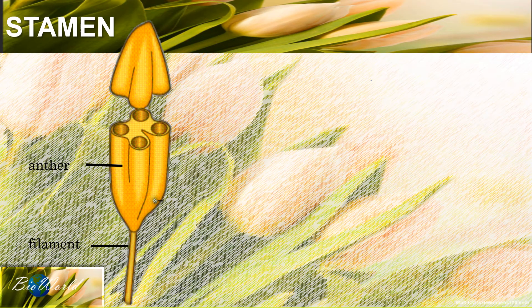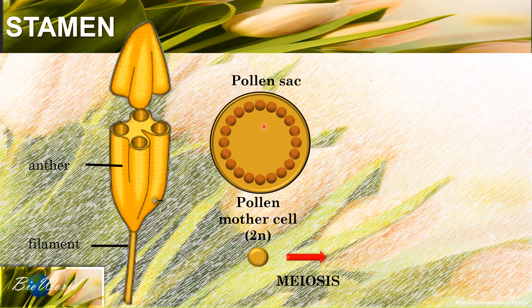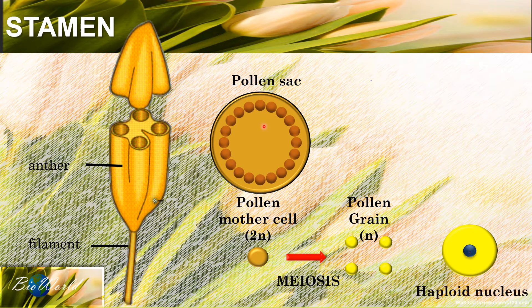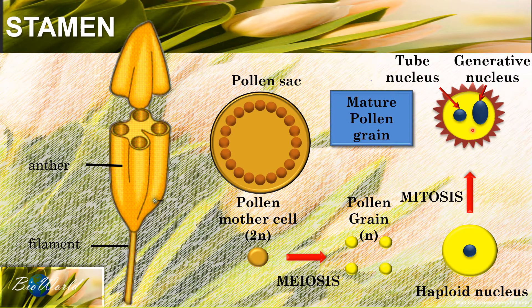Let's start off with the production of the male gametes. This occurs in the anther. The anther has four pollen sacs. In each pollen sac there are many diploid pollen mother cells. Each one of the pollen mother cells will carry out meiosis to produce four haploid pollen grains. In each one of the pollen grains, the nucleus will carry out mitosis to produce two nuclei — one smaller nucleus called the tube nucleus and a larger nucleus called the generative nucleus.